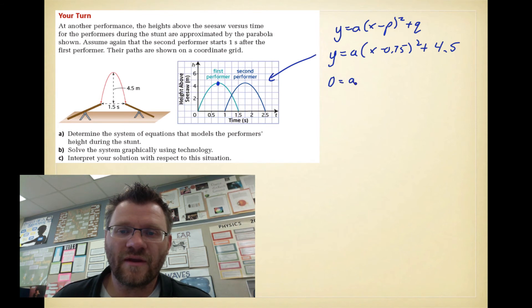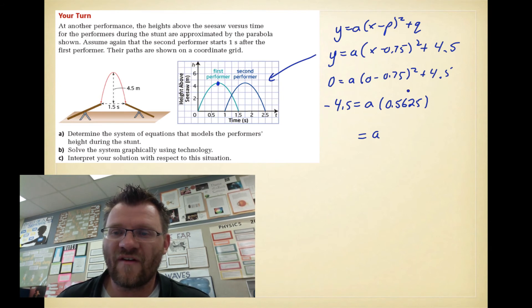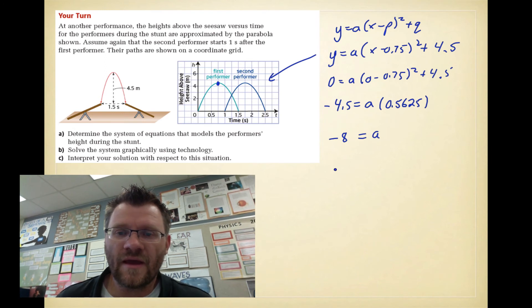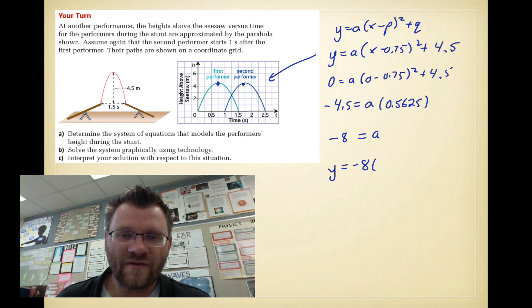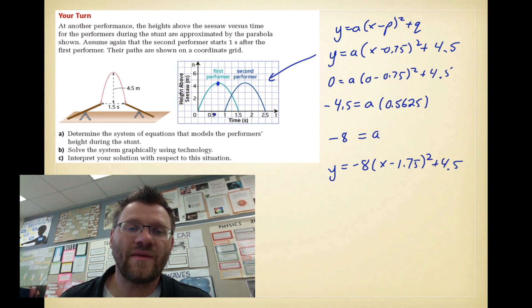We still need a value for a. So remember that to find this value for a, we need to plug in a point that's on the parabola. Well, the point that's on the parabola is this point, 0, 0. So we put in 0 and 0 for x. When we solve this thing, we move the 4.5 over to the left-hand side. So we get negative 4.5 equals a. And negative 0.75 squared is 0.5625. And that means our a value, when you divide negative 4.5 by 0.5625, our a value is negative 8. Now this other parabola is exactly the same shape, so it also has a value of negative 8. And the only thing that changes is its vertex. So its vertex happens to be at not 0.75, but 1.75. But it still has the same height. So it's x minus 1.75 squared plus 4.5.